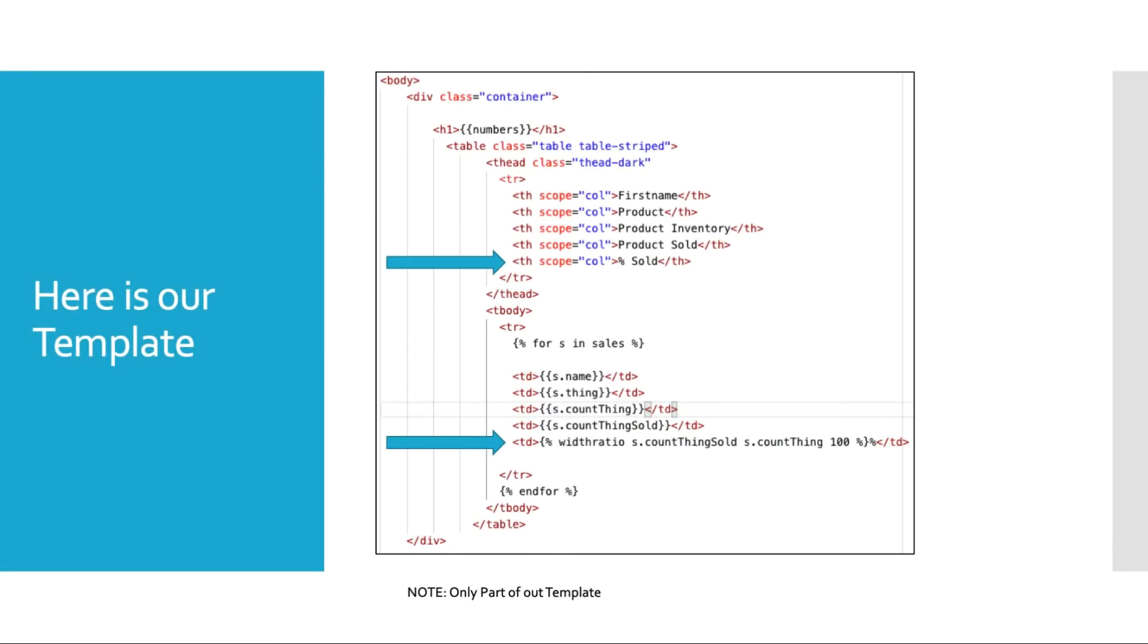All right, and here's where the magic will happen. We have an HTML table here, we're using a little bit of bootstrap, but that really doesn't matter for what we're trying to get after here. So you'll see where I have the arrows. We have a bunch of headers here: first name, product, product inventory, product sold, and the percent sold. Those first four, as we have seen, are fields that are stored in our model, it's part of our database schema.